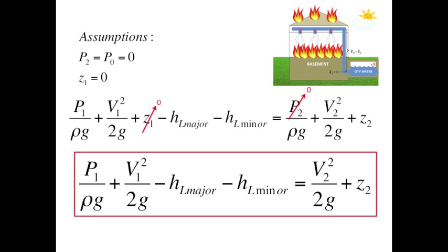To simplify the problem, assumptions are made. Setting point 1 as the starting point makes Z1 equal to 0 meters. Since we are using gauge pressure, any point that is exposed to atmospheric pressure is equal to 0, such as point 2.